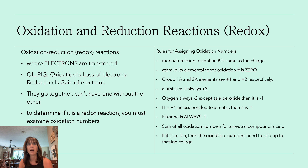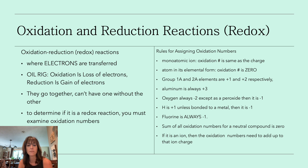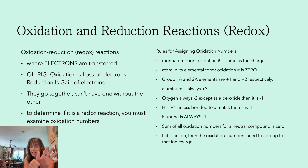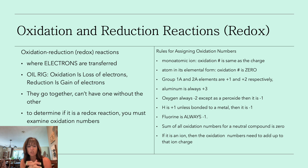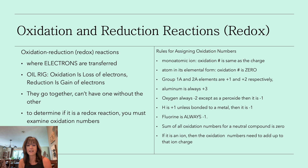When looking at a formula, say KNO3 — K is +1, O is −2, but there are 3 of them so that's −6. Plus 1 and −6 means N must be +5. The rule: the sum of all oxidation numbers for a neutral compound must add up to 0. But if it's an ion, the oxidation numbers need to add up to that charge. For the sulfate ion SO4 2−: O is −2 times 4 = −8. What plus −8 equals −2? Plus 6. It's helpful to memorize some polyatomic ions — in nitrate, N is always +5; in sulfate, S is always +6.